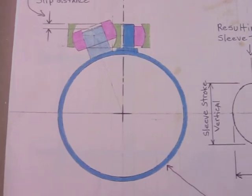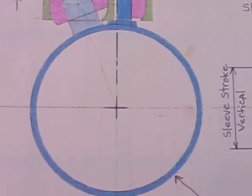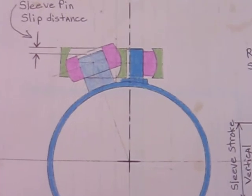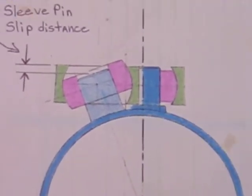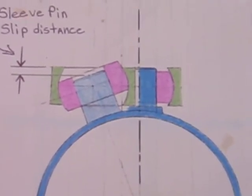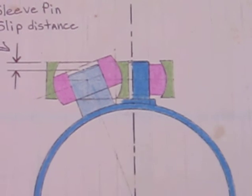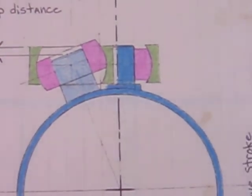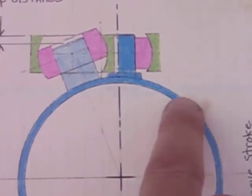This view here, you're looking at the sleeve from the top. You've got the drive ball. The drive ball itself is in the purple, the outer housing of it is green. The sleeve is the dark blue.